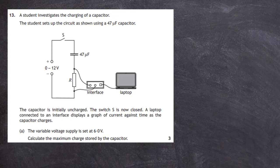Question 13 from the 2019 Higher Physics SQA exam, section 2. A student investigates the charging of a capacitor. The student sets up the circuit as shown, using a 47 microfarad capacitor. The interface is connected across the resistor and data is collected into the laptop. The capacitor is initially uncharged, the switch S is now closed, and a laptop connected to an interface displays a graph of current against time as the capacitor charges.